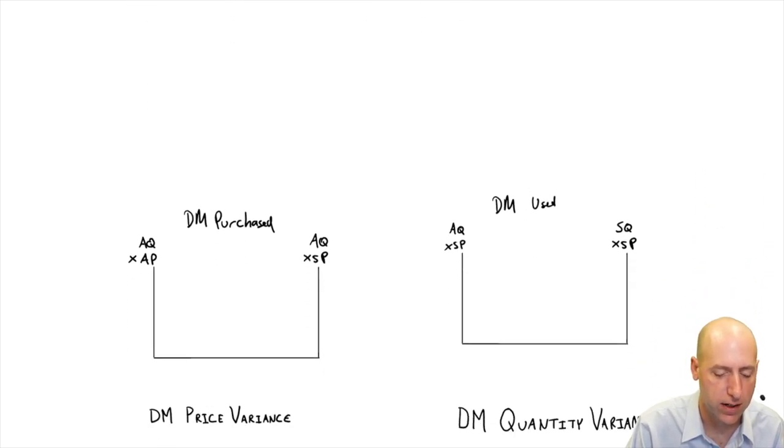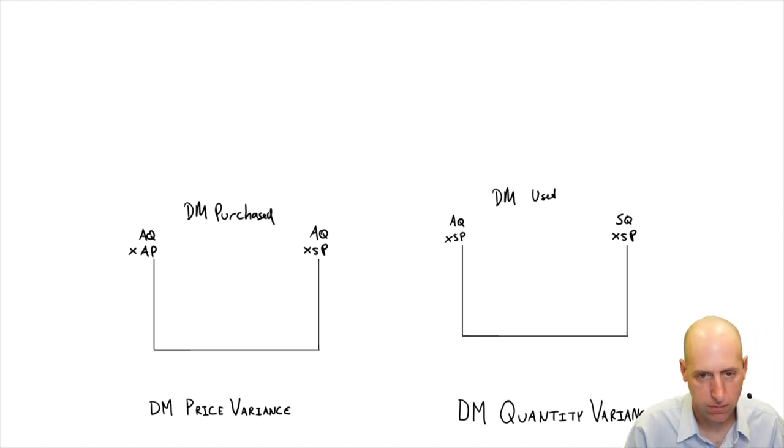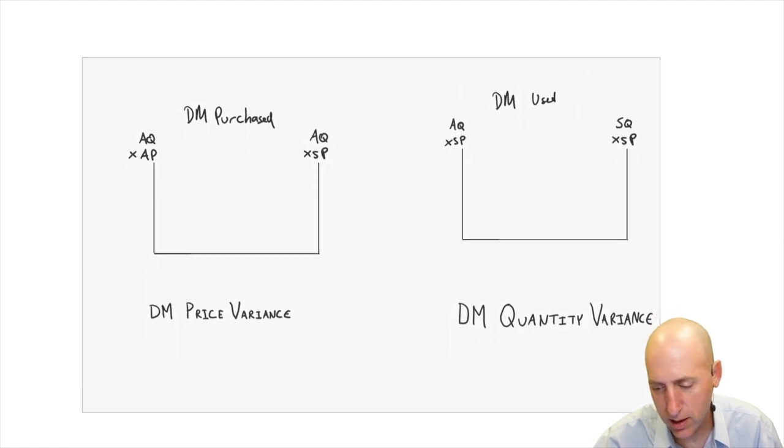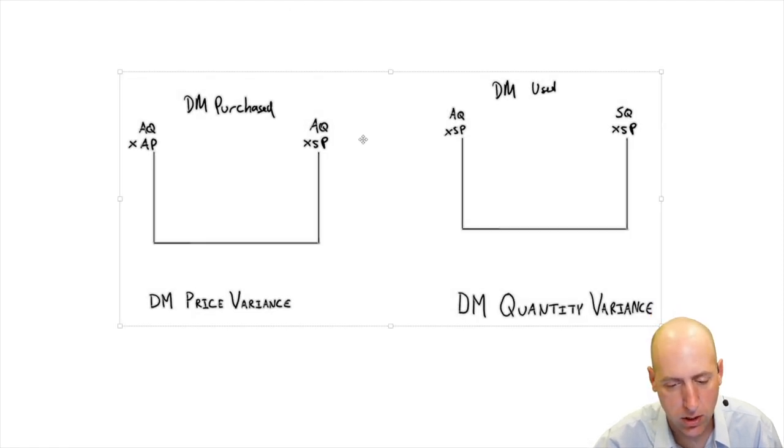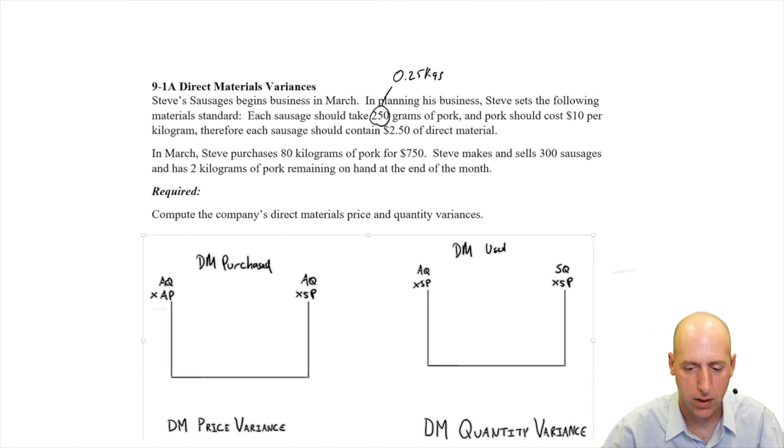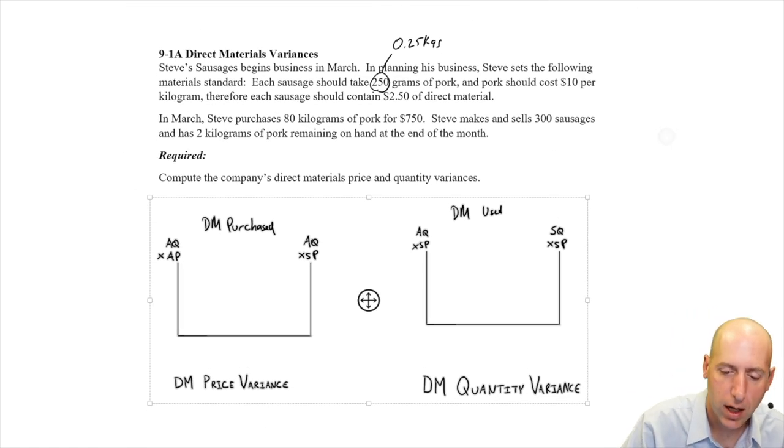Okay, remember materials price variance. Here's the formula or the table I like to fill in. It's all about the actual quantity purchased times the actual price, and we'll take the difference between that and the actual quantity purchased and the standard price. So let me just scroll this up so we can have everything on the screen at once.